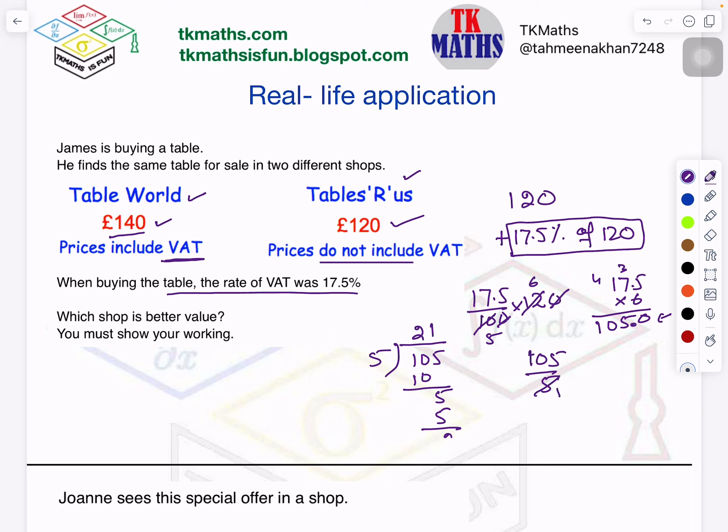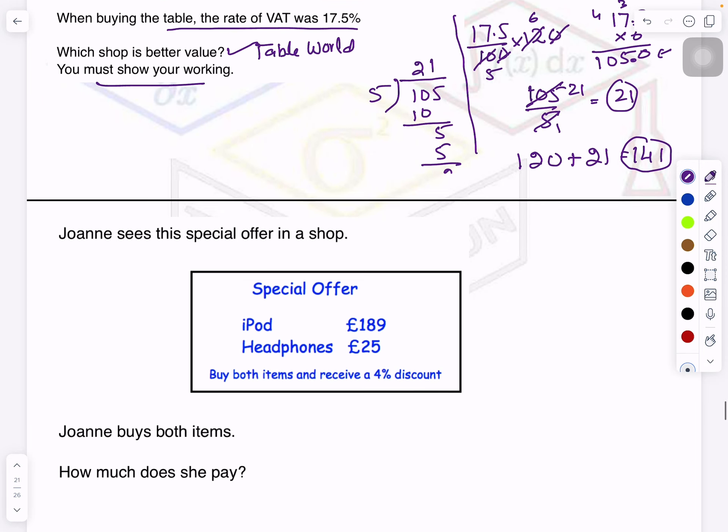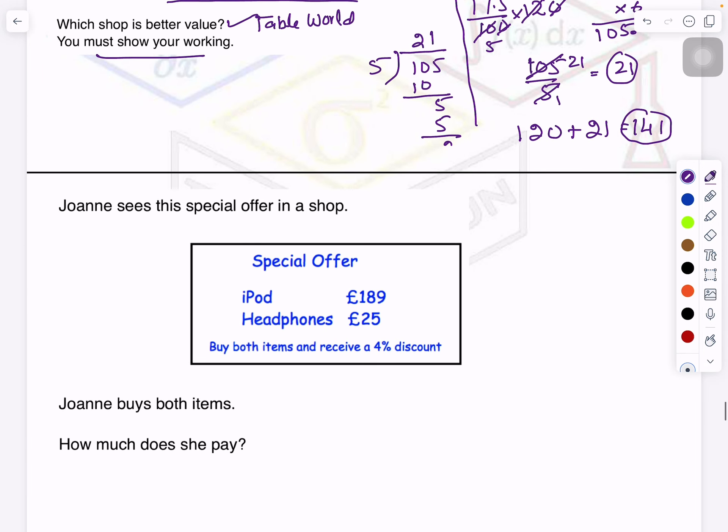So I got 21. It means I have to pay £21 more. So 120, which was the original price of the table at Tables R Us, plus 21 will be what? 141. And what was the price here at Table World? 140. So which is cheaper? 140. So which shop is better value? I will say Table World has a better value, and you will show all your working. So you will show this division, multiplication which I have shown here. Okay, so that will explain your reason why you are going with shop Table World.